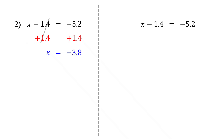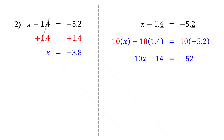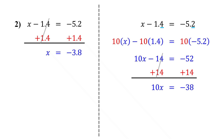Now let's try method two where we clear the decimals first. We'll begin by checking how many digits are after the decimal point in each number. Here, both have one digit, so we multiply everything by 10. That moves the decimal point one place to the right. From here, just solve it like any two-step equation. First, add 14 to both sides to isolate the variable term. On the left, these cancel out, leaving 10x. What is negative 52 plus 14? That is easier to work out — it is negative 38. Now divide both sides by 10 to get x by itself. That gives us x equals negative 3.8.